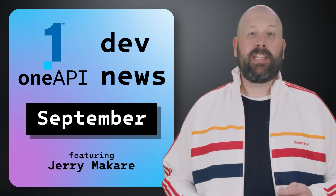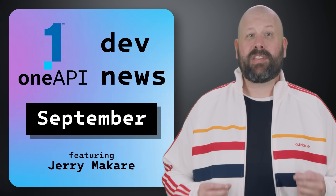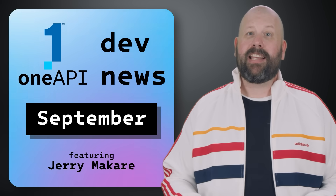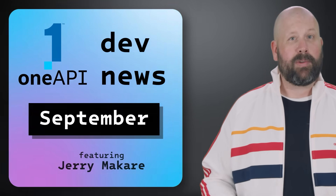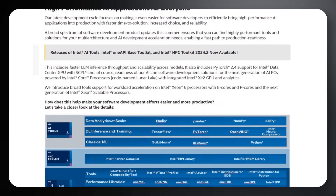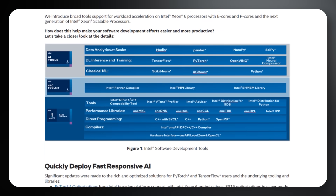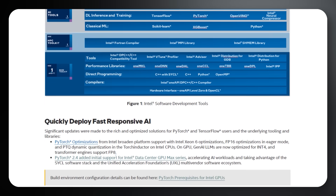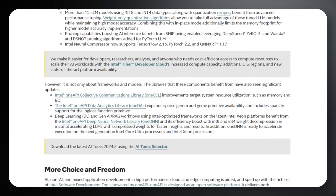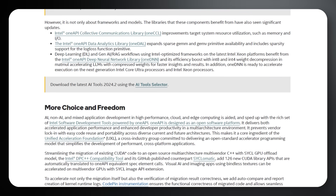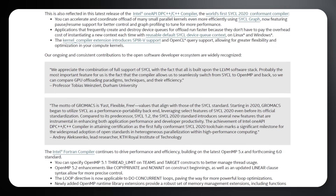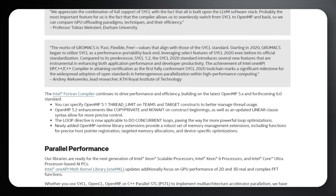First up, Intel's 2024 Tools Summer Update introduces significant advancements for AI developers using Intel OneAPI tools. The updates focus on enhancing AI model performance with key improvements in Intel Distribution of OpenVINO Toolkit, Intel Extension for PyTorch, and Intel Neural Compressor. These updates streamline AI development across diverse hardware, enabling optimized inference and training on CPUs, GPUs, and accelerators.